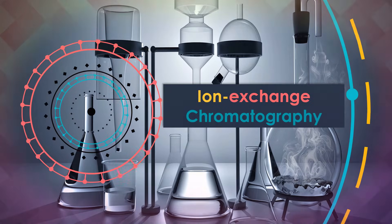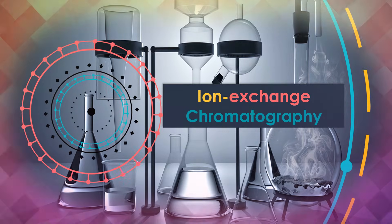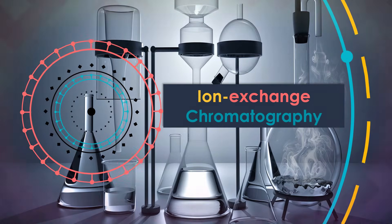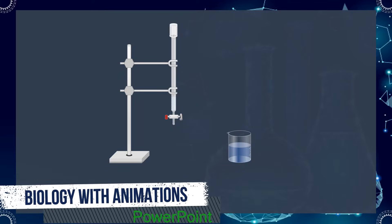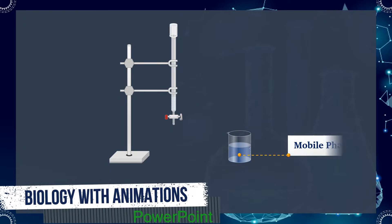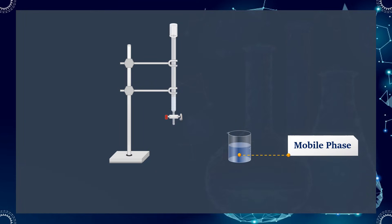Ion-exchange chromatography is a chromatography process that allows the separation of ions and polar molecules based on their charge. As with other forms of chromatography, in ion chromatography there is a mobile phase, which generally consists of buffer solution, and a stationary phase which consists of a matrix that contains charged ionizable functional groups.